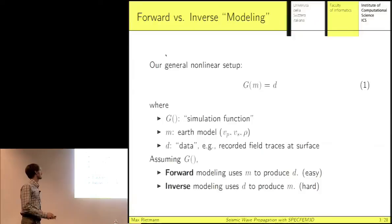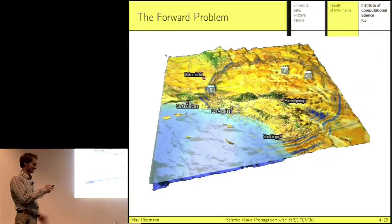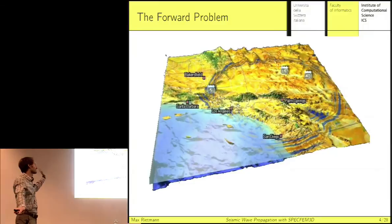Here we have a picture from the SPECFEM manual of a simulation they did for the cover in Los Angeles. You can see there was some source in the middle and you have the seismic waves propagating outwards. This is a forward problem — we're simulating waves. This is the model we're talking about.